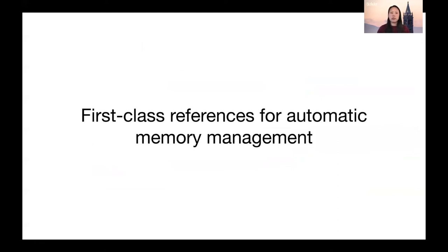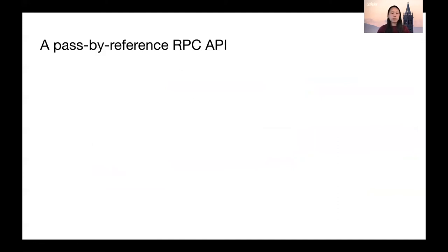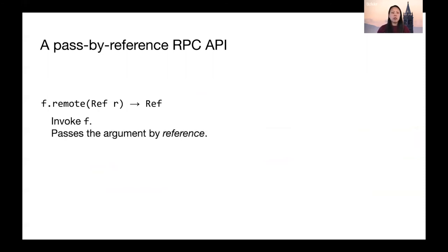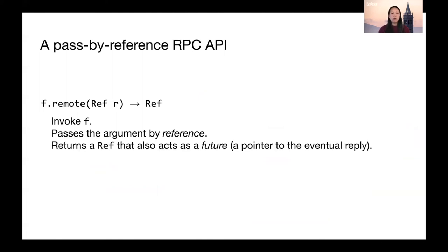Let's take a closer look at first-class references. The API is actually very similar to pass-by-value RPC. A client can call a remote function f, but it can also pass an argument by reference. The system is responsible for dereferencing the value on the executor, which is important because it means the system has visibility into the function's dependencies. All function invocations return a reference, and the return reference also acts as a future — a pointer to the eventual reply of the function — allowing the client to make other RPC invocations in parallel.